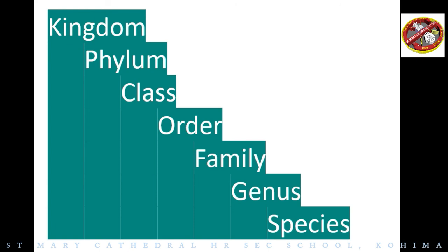By separating organisms on the basis of a hierarchy of characteristics into smaller and smaller groups, we arrive at the basic unit of classification, which is species. Organisms are said to belong to the same species if they are similar enough to breed and perpetuate.